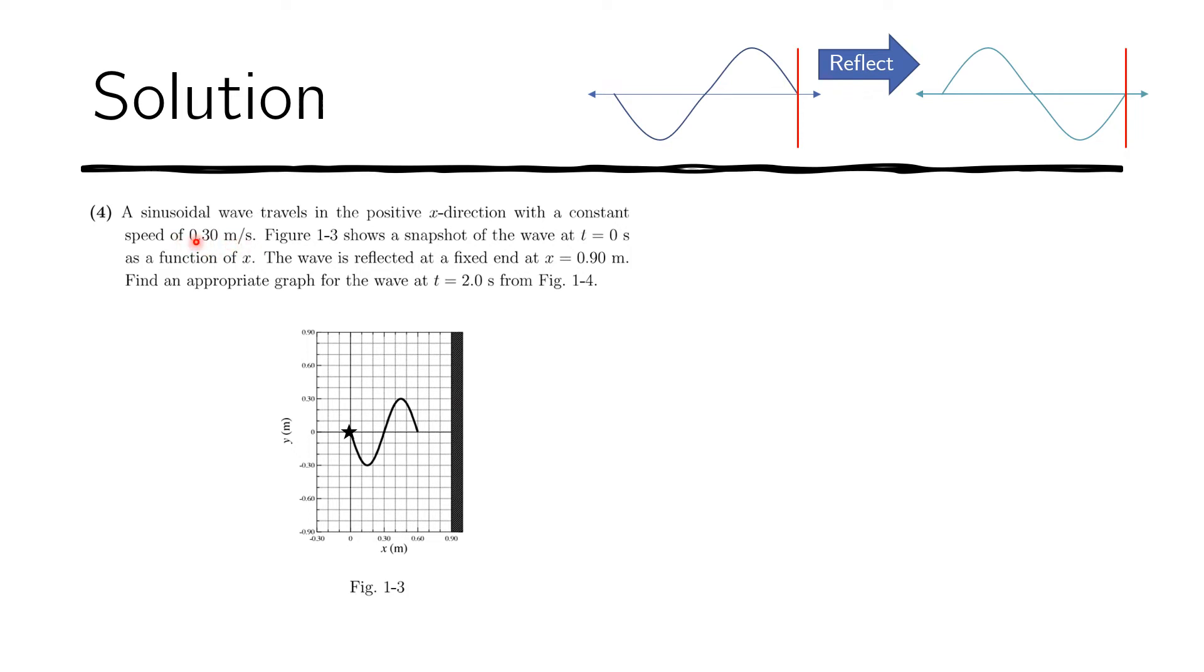So after two seconds, the wave would have moved by how much? That would be dependent on the speed indicated in the problem. Because it moves at 0.30 meters per second, after two seconds it would have moved by 0.30 times 2 seconds, which is 0.6 of a meter. So after two seconds, the star would have been translated 0.6 of a meter, from here to here. In fact, the whole wave would have been translated. So it moves from here and then now it becomes like this after two seconds.